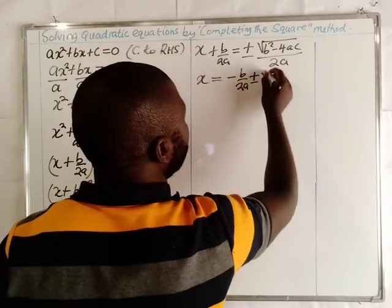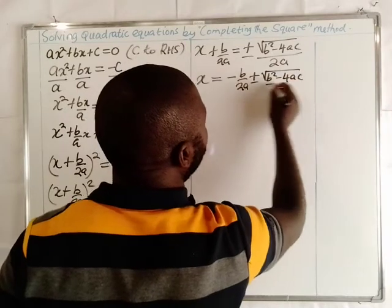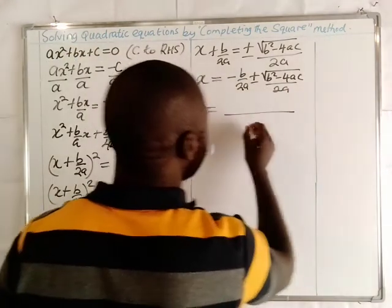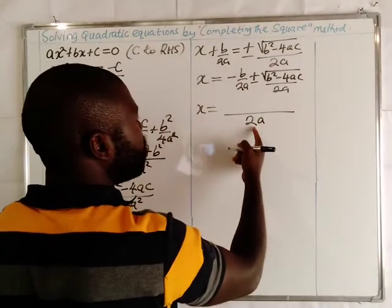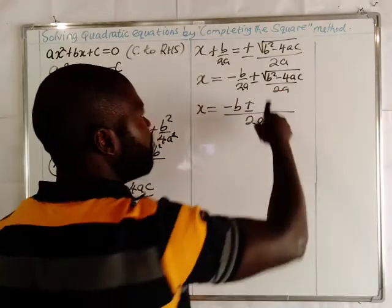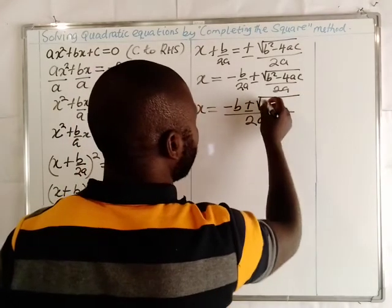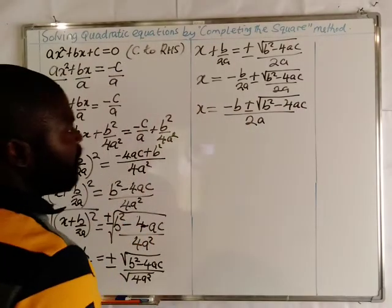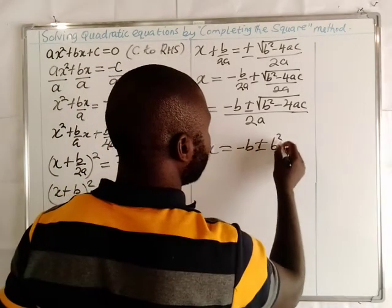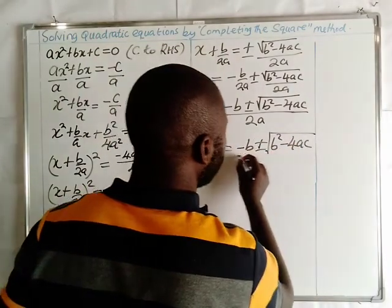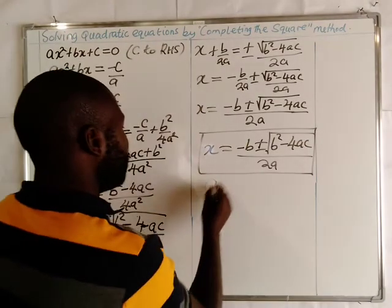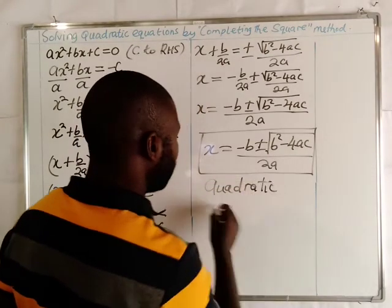Expressing these two fractions as a single fraction with common denominator 2a, we arrive at x equals negative b plus or minus the square root of b squared minus 4ac, all over 2a. This is what we call the quadratic formula.